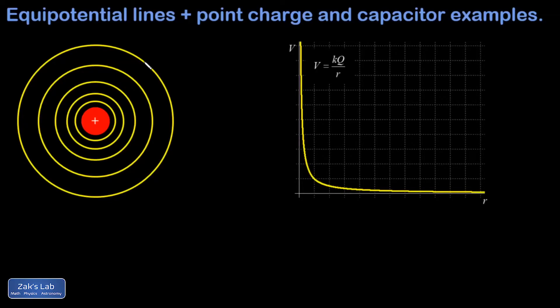In this video, we define equipotential lines and deduce their relationship to electric field lines. We introduce equipotentials in the context of an isolated point charge, and we follow up with an example of equipotentials between the plates of an ideal capacitor.